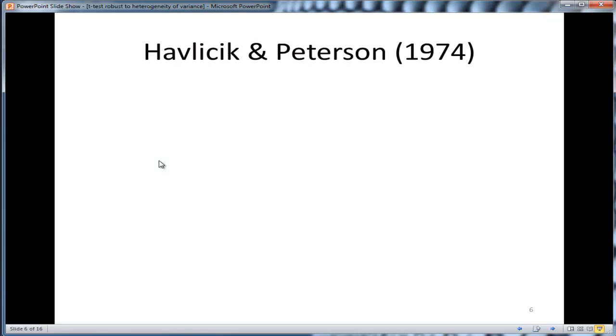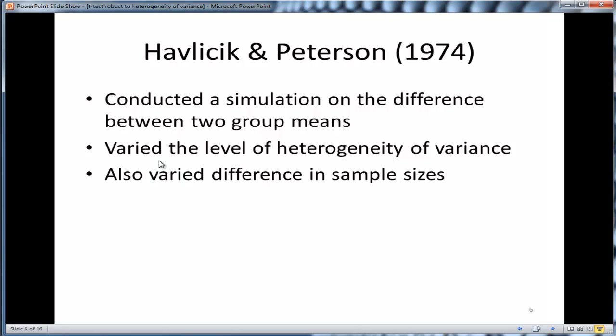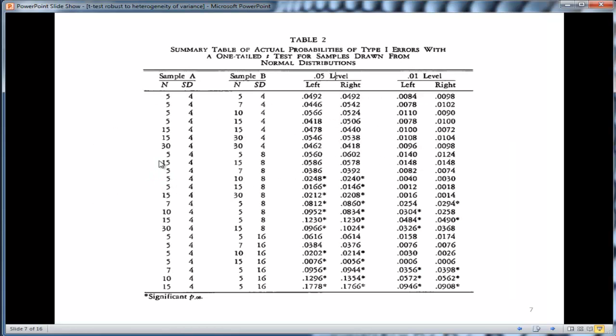Havlicek and Peterson addressed this question using a slightly different technique than Ramsey. They conducted a simulation on the difference between two group means. They varied the level of heterogeneity of variance, and they varied the difference in sample sizes as well. They also varied levels of skew, so they also deviated the distributions from normality.